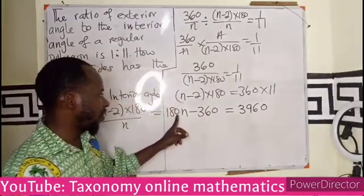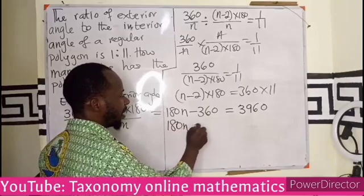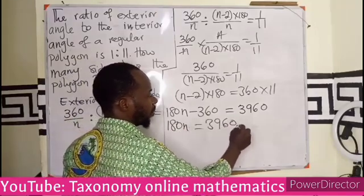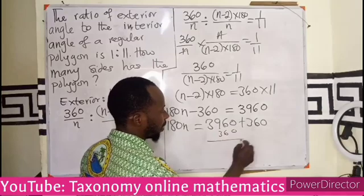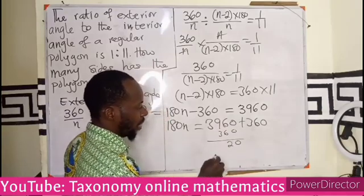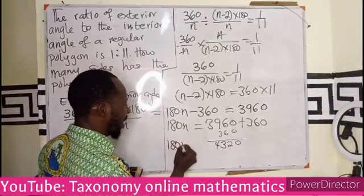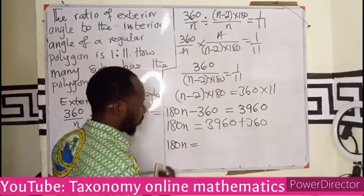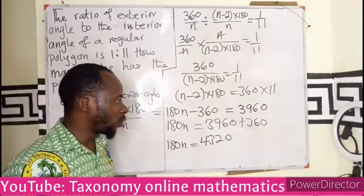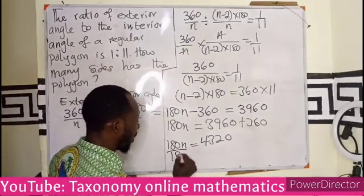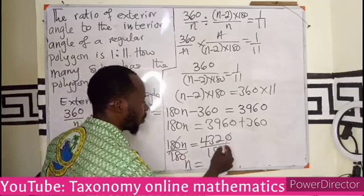Transferring the constant to the other side: 180n = 3960 + 360, which gives 180n = 4320. We are solving for n, so we divide both sides by 180.